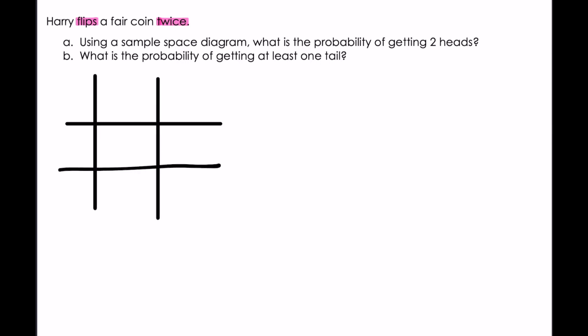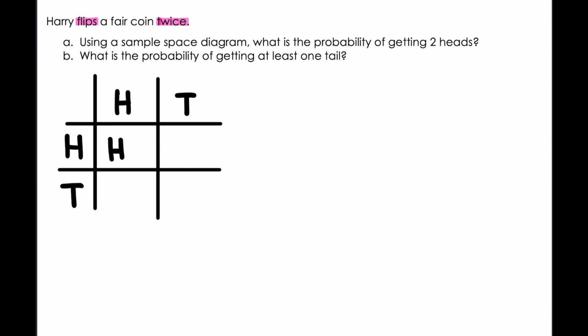Our sample space diagram is going to consist of our outcomes. On our first flip, we have two outcomes — it can be heads or tails. On our second flip, we have two outcomes — it could be heads or tails. So our way of working with a sample space diagram is that we get our outcomes: the first outcome would be head and head, or head and tail. If on our first flip we flipped a tail, then we'd have tail and head, and tail and tail.